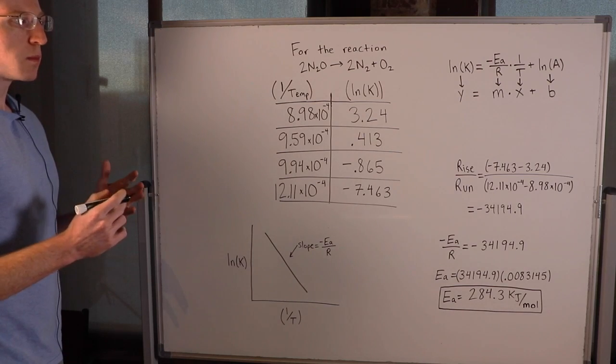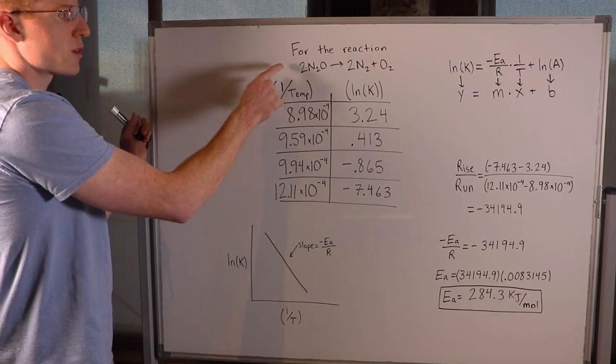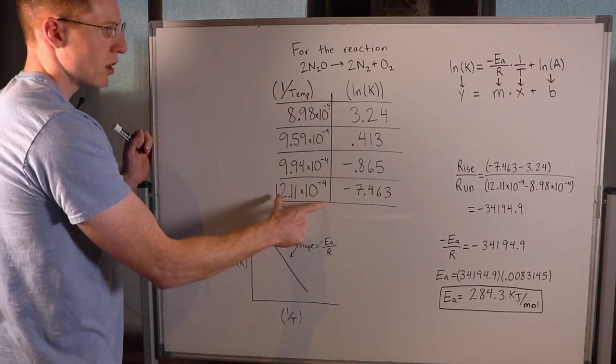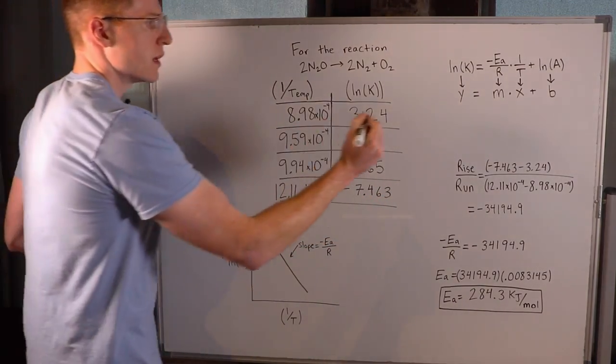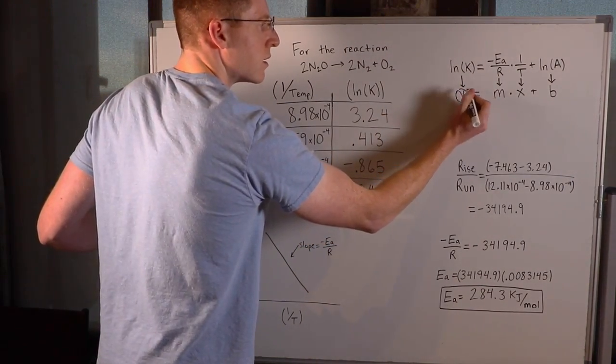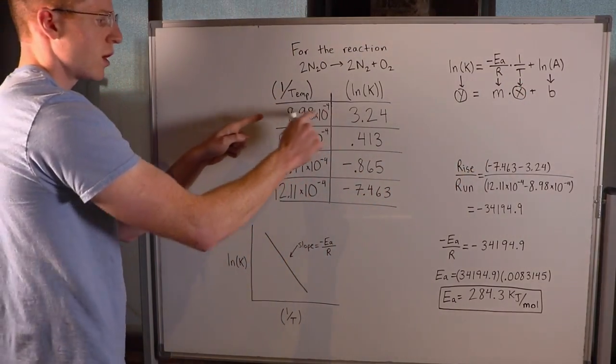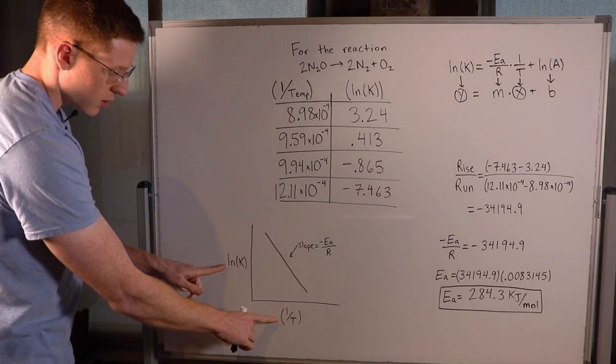We can plot a straight line if we have data. I have data here for this reaction with 1/T in one column and ln(k) in another. These are x and y values. I plotted these points on this graph.